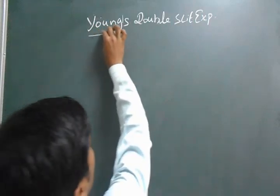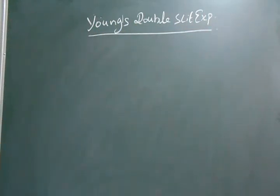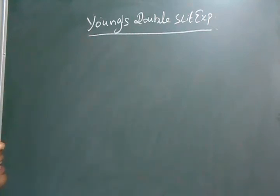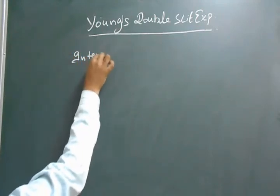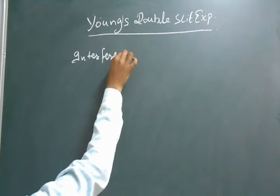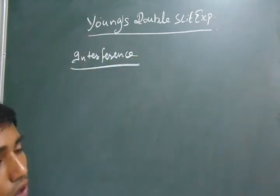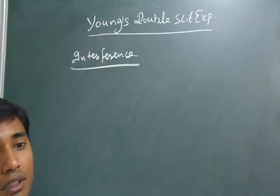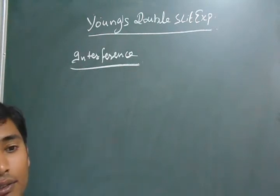The topic is Young's double-slit experiment. Young's double-slit experiment is used to explain the interference pattern. Interference means the superposition of crest and trough, and the resultant phenomenon is called interference.